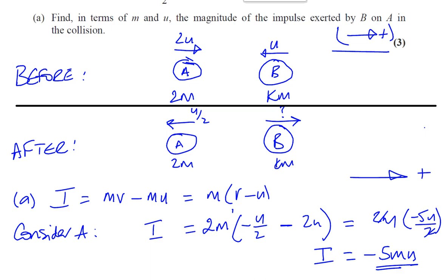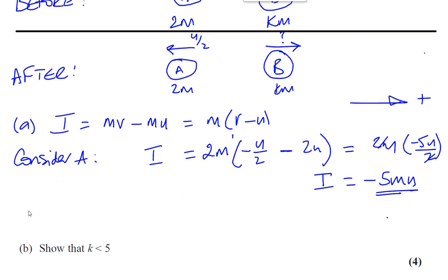That has been exerted on A, of course, by B. So the impulse exerted by B on A, because it's caused it to change direction, is equal to 5mu, the magnitude. If you want to find the magnitude, 5mu. So that's the answer to part A of our question. So we don't need the sign because it's asking us for the magnitude. So I'll go on to the second part of the question in the next video.